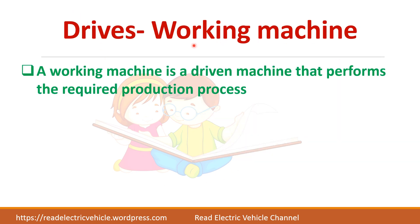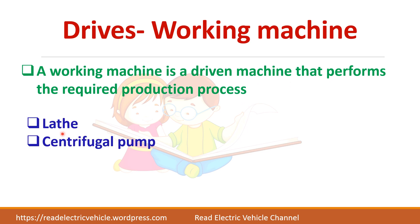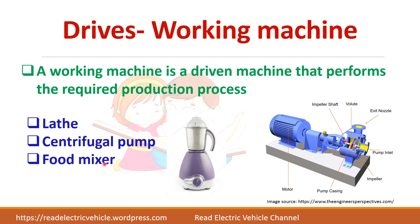Now let us see what is a working machine. It is the driven machine that performs the required production process. Examples include a lathe, a centrifugal pump, or a food mixer. In a food mixer, you have a motor, and the driven machine is where you put the food inside and it performs the operation.